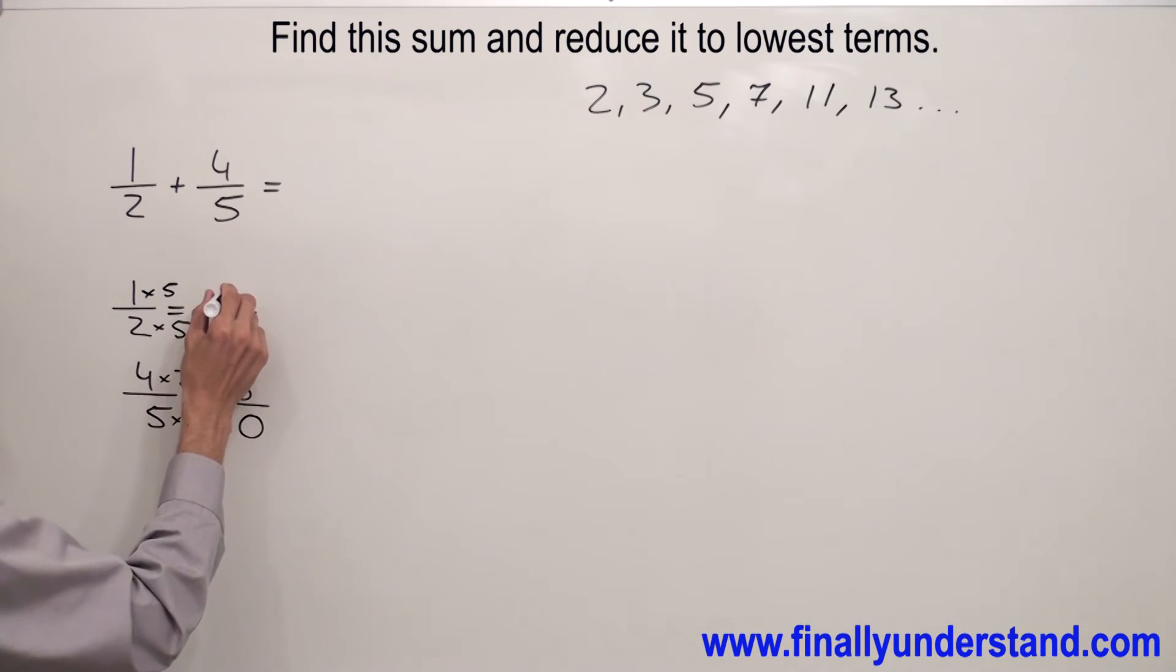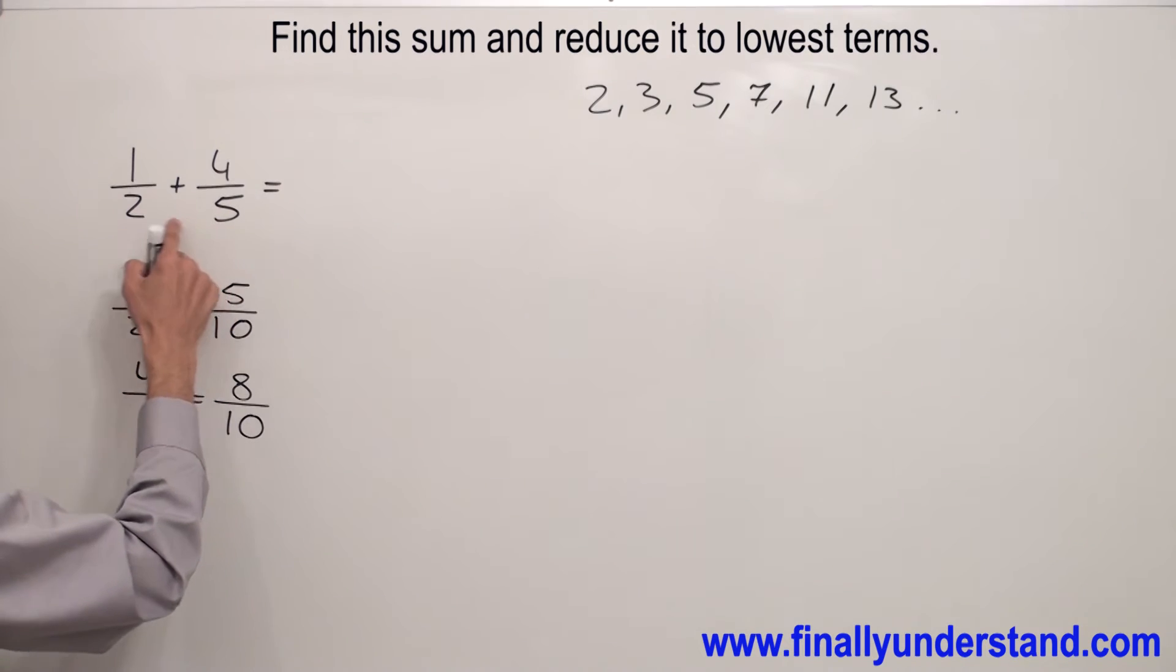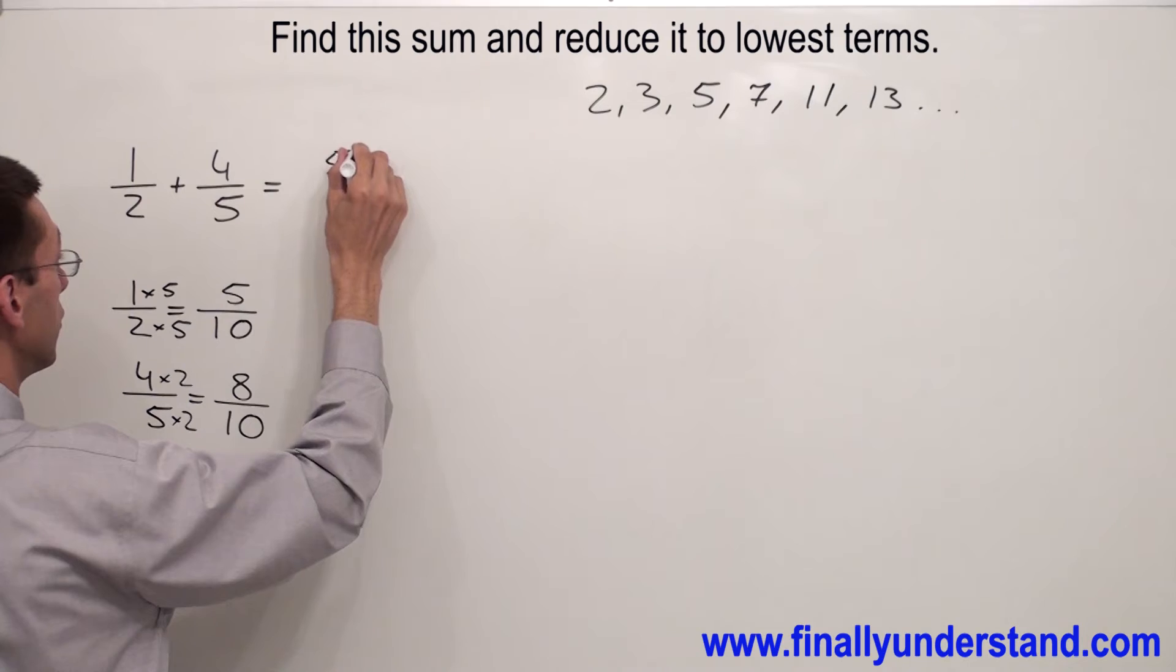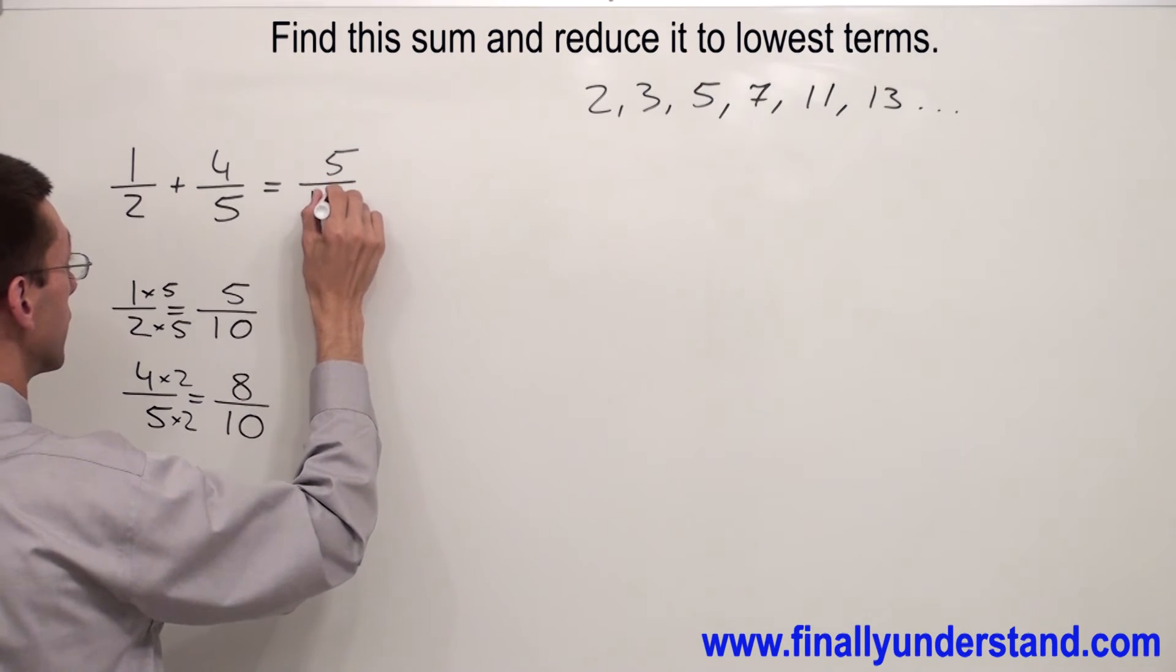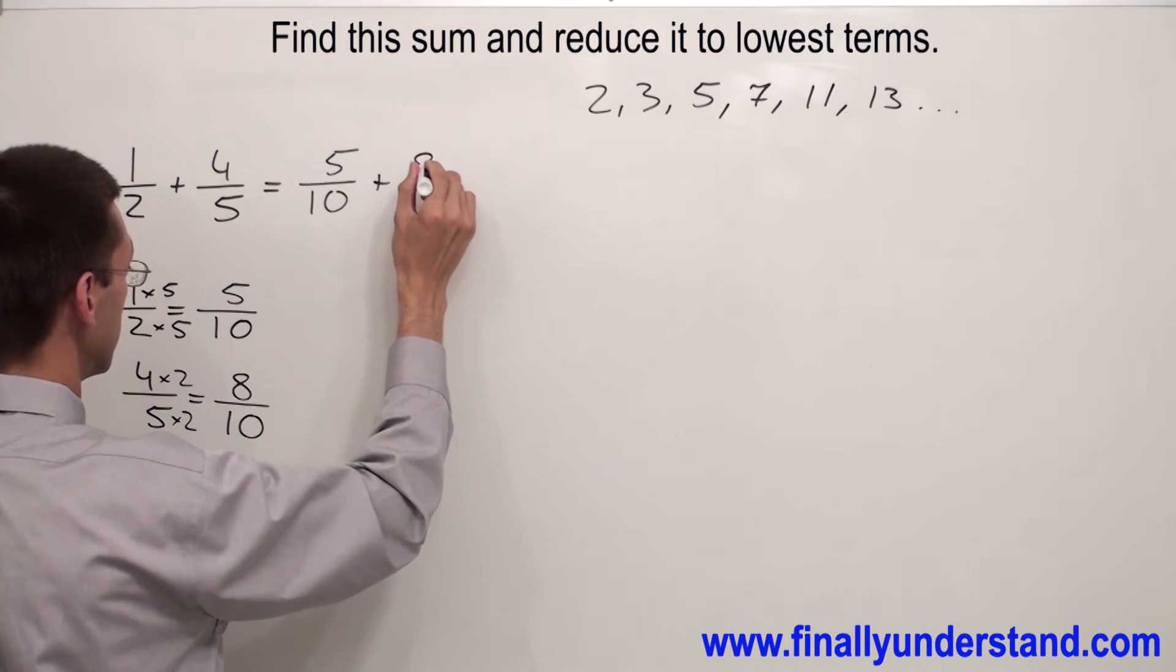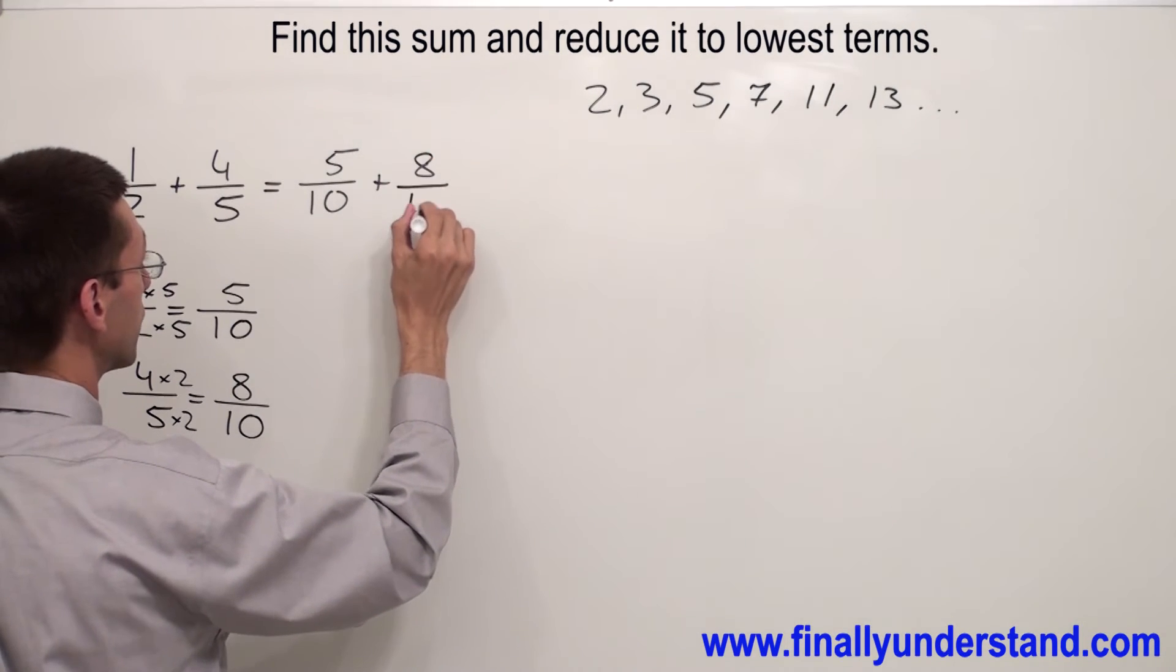1 times 5 is 5. I found the equivalent fractions to the fractions in my problem. I have 5 over 10 plus 8 over 10.